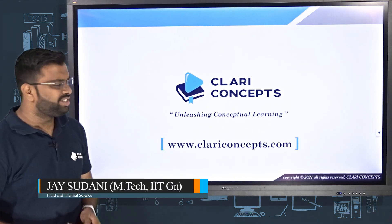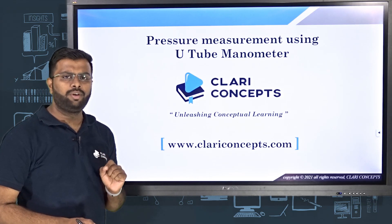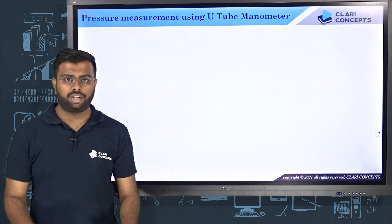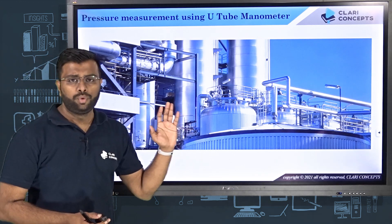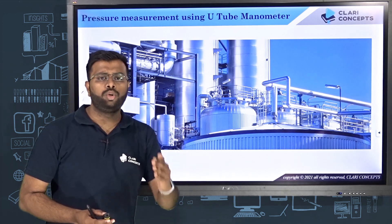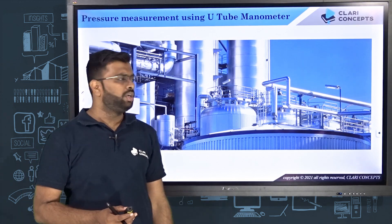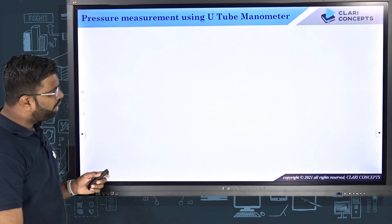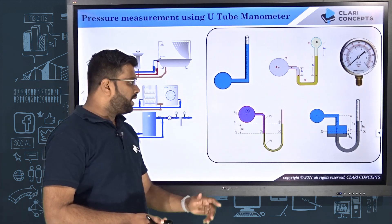Hello students, welcome back to Clarity Concepts, unleashing conceptual learning. Today in this lecture we are going to talk about pressure measurement using one very important device called the U-tube manometer. As discussed earlier, pressure measurement has its own importance in the process and power industries where you will see a lot of fluid networks — fluid flowing through pipes — and measuring the pressure at different junctions is very essential to make sure that mechanical equipment like pumps and compressors are running at optimal efficient performance.